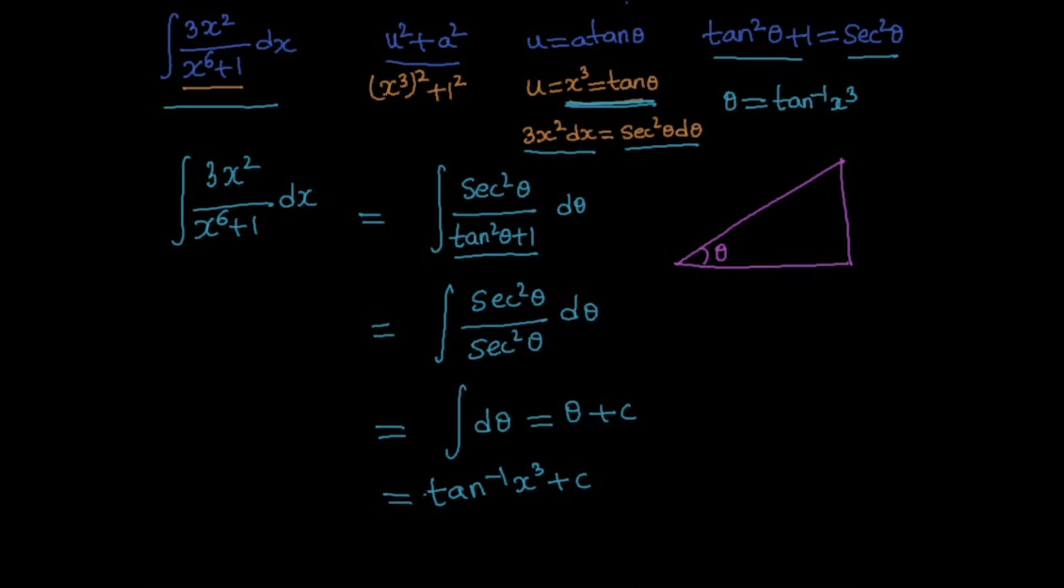And we know tan theta is equal to opposite by adjacent, which is equal to x cube by 1. So the opposite side of theta is x cube and the adjacent side is 1.